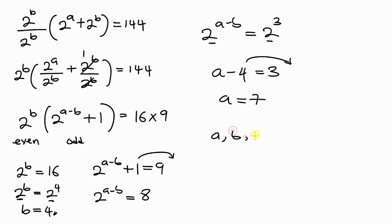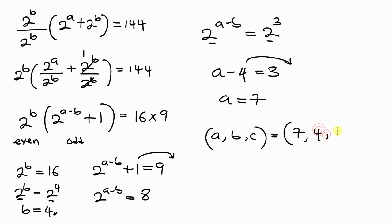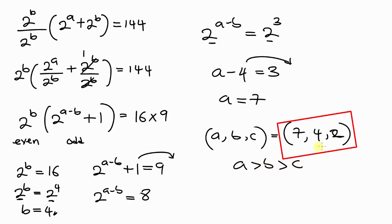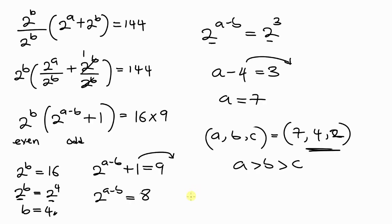So the values are a = 7, b = 4, and c = 2. We can confirm that a > b > c, which matches our initial assumption.